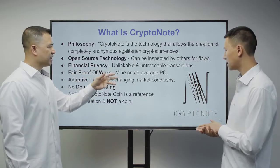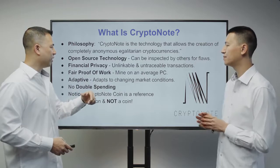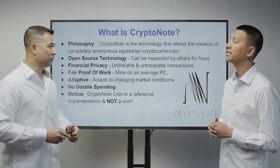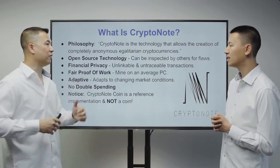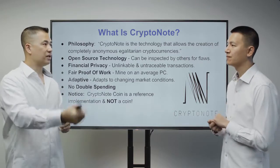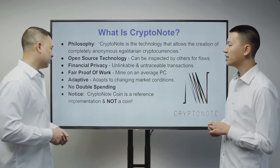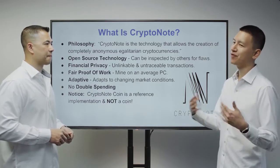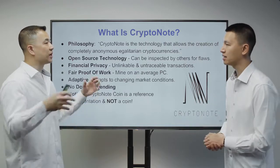CryptoNote has financial privacy with unlinkable and untraceable transactions — you cannot go back and see where transactions came from or where they're going. It features fair proof of work: it can be mined on an average PC without requiring a whole mining company or ASICs. It's adaptive to changing market conditions, so you can adjust the software parameters as markets change. And no double spending means once you send tokens to a recipient, you can't copy and send them again.